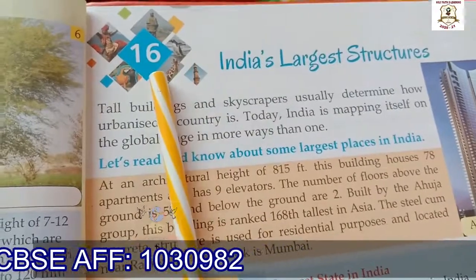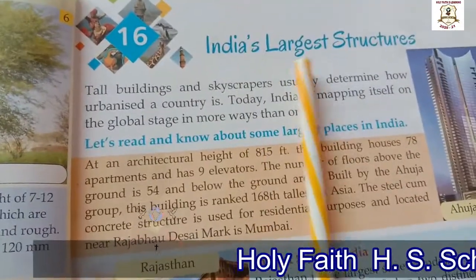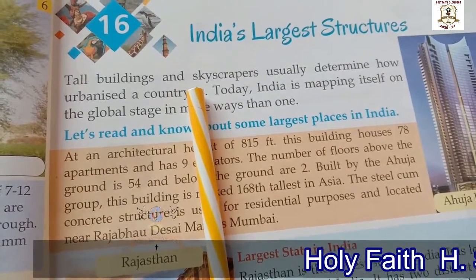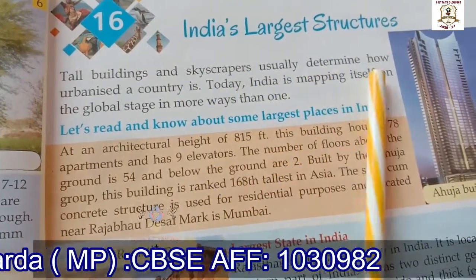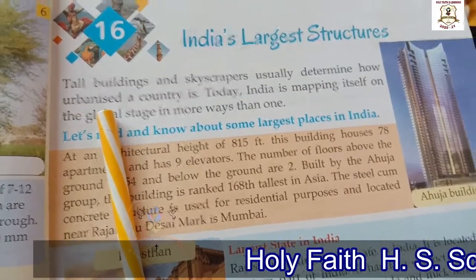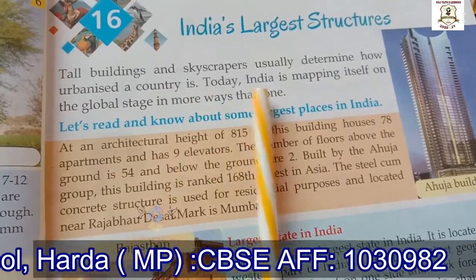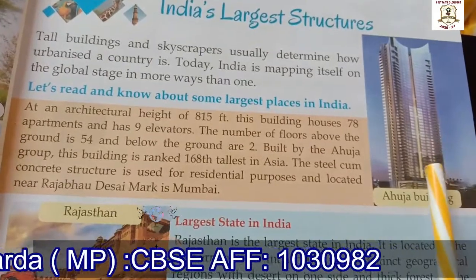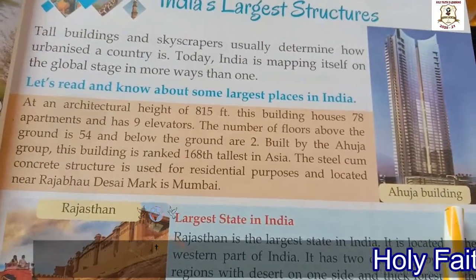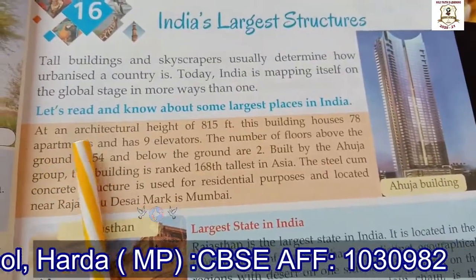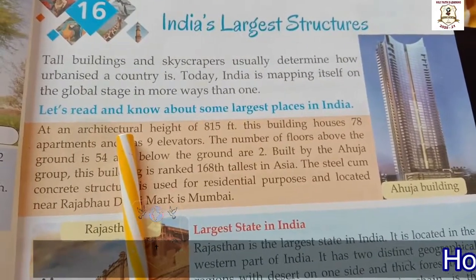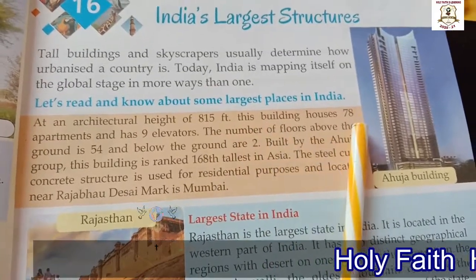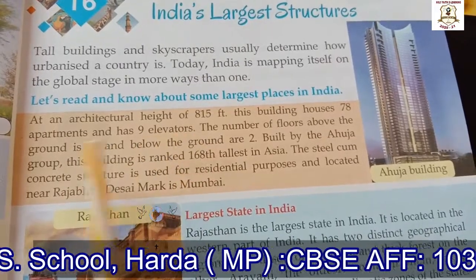Now we move to Lesson 16: India's Largest Structures. Tall buildings and skyscrapers — meaning very tall buildings of many stories — show how urbanized, meaning becoming more like a city, a country is. India is mapping itself on the global stage in more ways than one. Look at this picture — it is a picture of the Ahuja Building. At an architectural height of 815 feet, this building houses 78 apartments and has nine elevators.